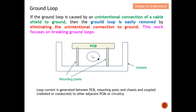If the ground loop is caused by an unintentional connection of a cable shield to ground, then the ground loop is easily removed by eliminating the unintended connection. For another example — consider a metal chassis with a PCB inside. Typically under the PCB we have a ground plane and mounting posts. You can see that we actually create a ground loop here because the PCB grounding, the mounting posts (being good conductors), and the metal chassis together potentially create a ground loop — current is generated between PCB mounting posts and chassis copper, which can radiate out as an EMC issue.